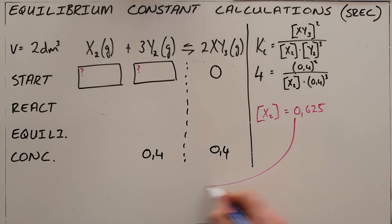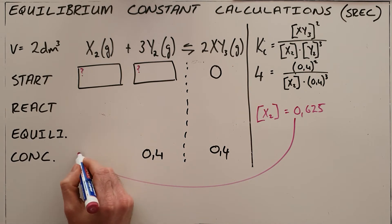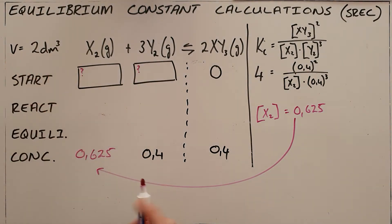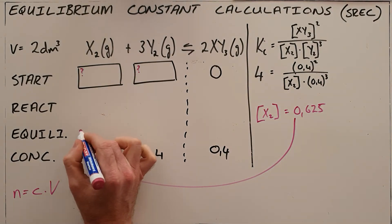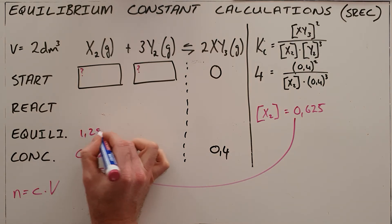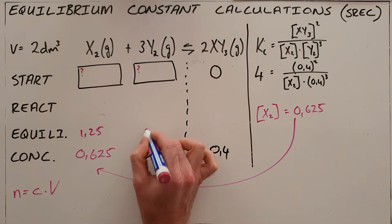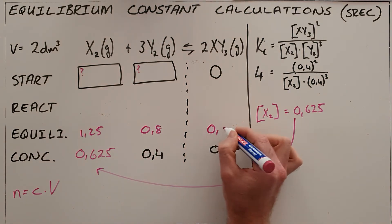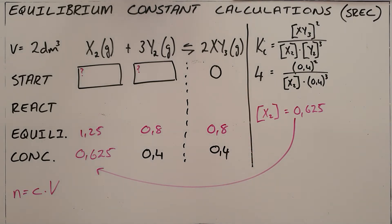We can then substitute that value directly into the concentration in our table, 0.625. The question has stated that we have a volume of two cubic decimeters, and that means that we can use this formula: number of moles is equal to concentration times volume. So we multiply each concentration by two to find the equilibrium number of moles, which means that we have 1.25 moles of x2 at equilibrium, 0.8 moles of y2 at equilibrium, and 0.8 moles of xy3 at equilibrium.